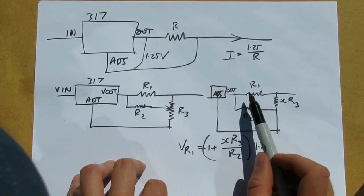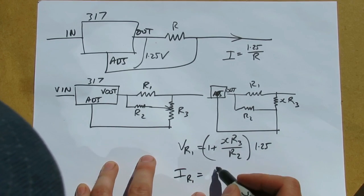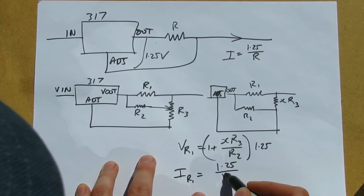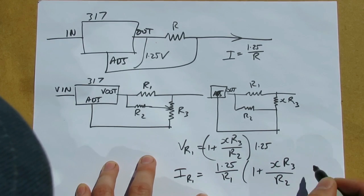Therefore, the current through R1 will be 1.25 divided by R1 into 1 plus XR3 over R2.